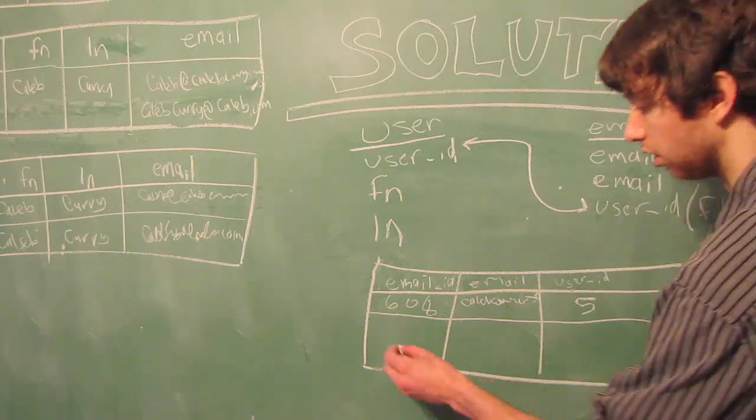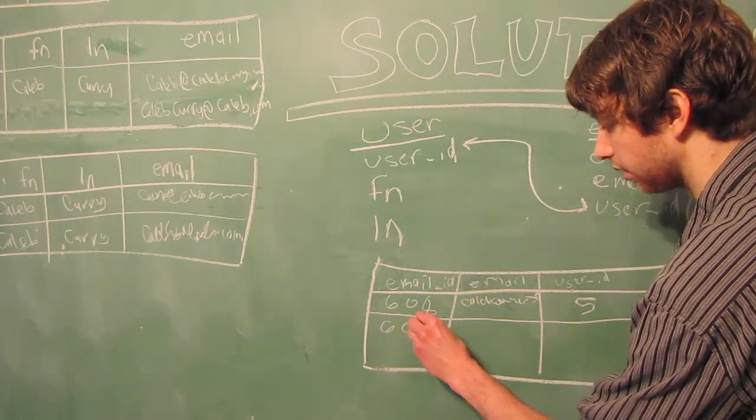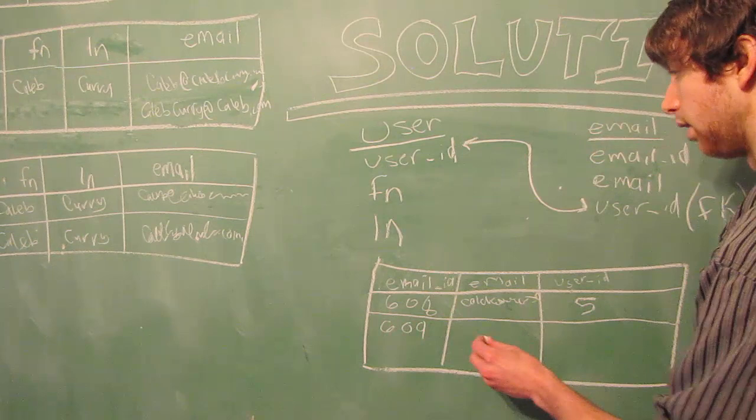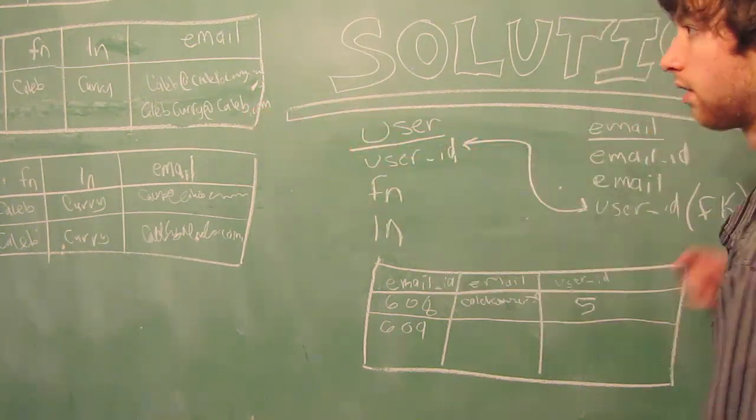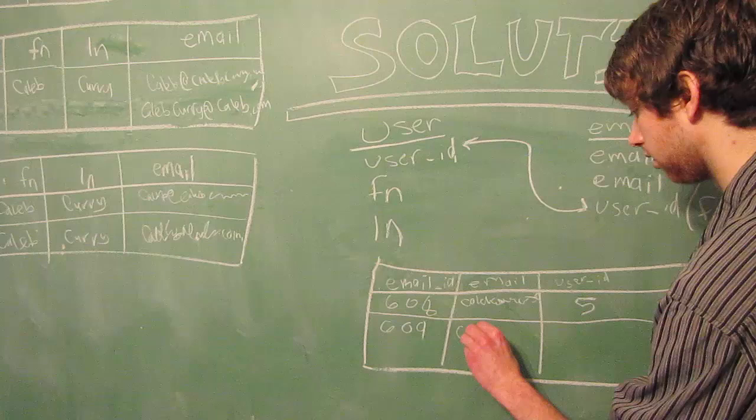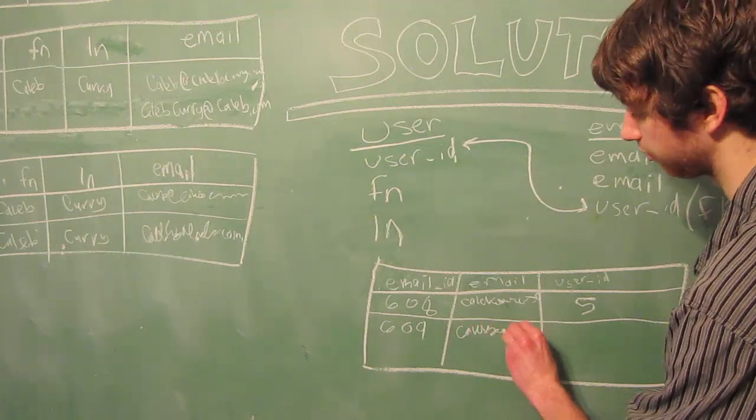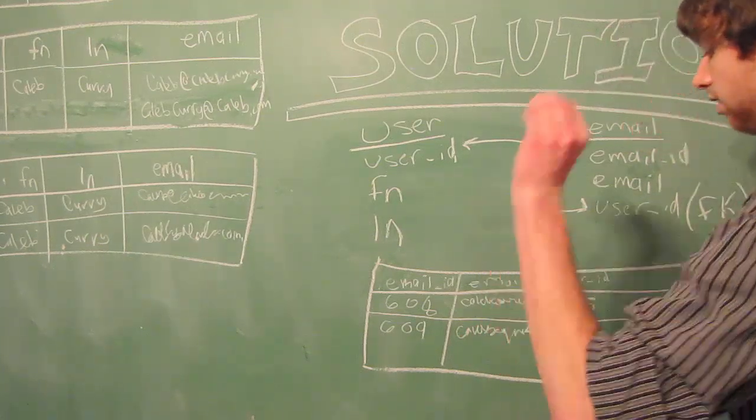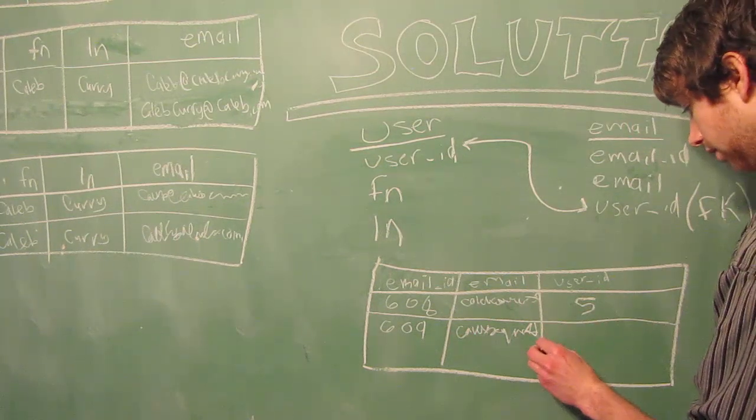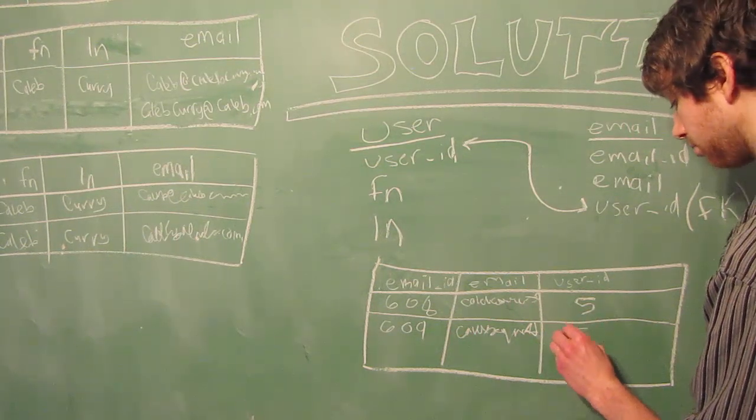Then we could have another row, and it would be a new email, so we'd have a new email ID. It would be a different email. We would use this one this time. And I'm going to make that beautiful handwriting that you guys love. There we go. And then the user ID for that would also be 5.